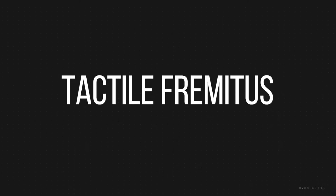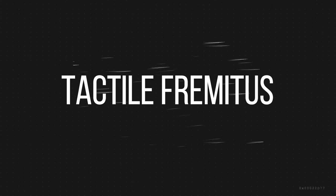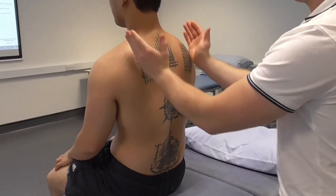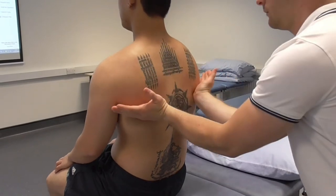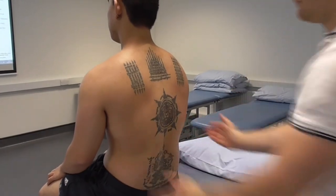Now I will examine the patient's anterior and posterior thorax using the tactile fremitus test. Tactile fremitus is a palpable vibration of the chest wall resulting from speech. The first way to perform it is to place the ulnar surface of your hands against the patient's chest wall and ask them to repeat the phrase '99'.